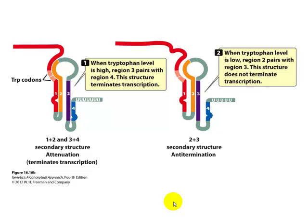When your tryptophan levels are low, regions 2 and 3 have time to interact, because the ribosome is stalled waiting for tryptophan-tRNA. This 2-3 hairpin allows for continuous transcription — it does not block the operon; it tells the operon to keep going. So low tryptophan means the transcription keeps going and forms the 2-3 loop, which is a signal to keep on making more tryptophan because the cell is low on it.